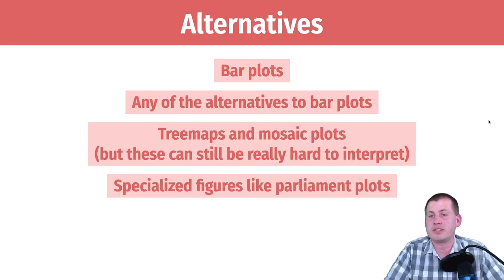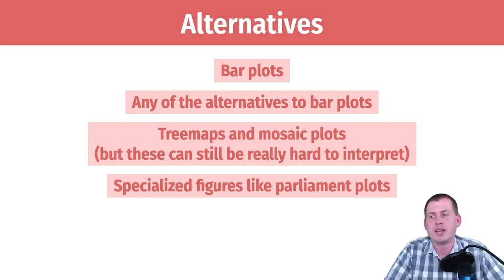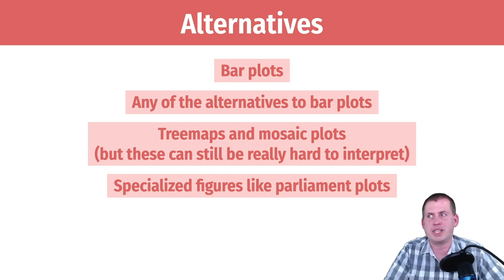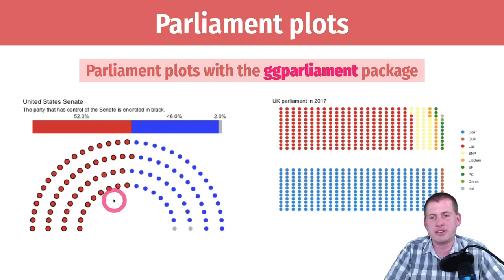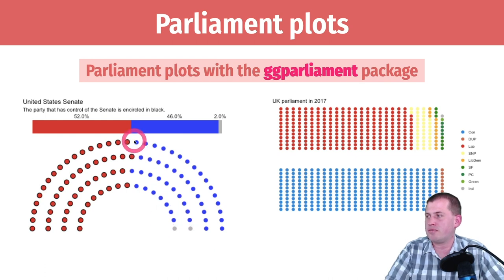Another alternative is to use specialized figures for the thing you're actually trying to show the proportions of. One of these is something called a parliament plot. You may have seen these in CNN reports, where it has the shape of the Senate or the House of Representatives and colors them by seats.